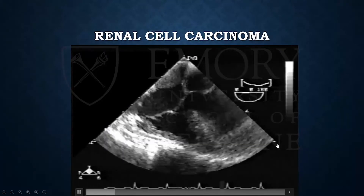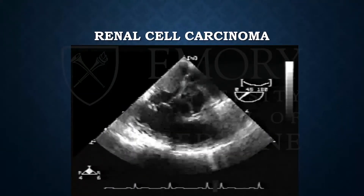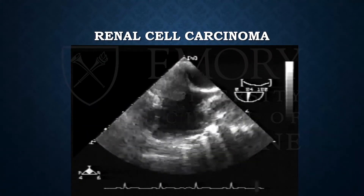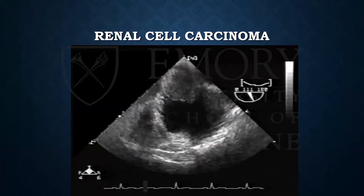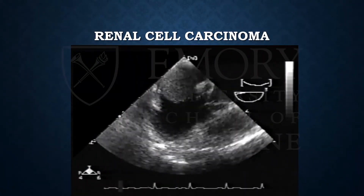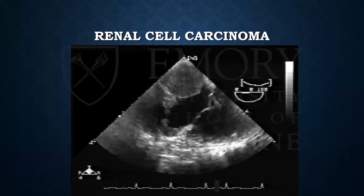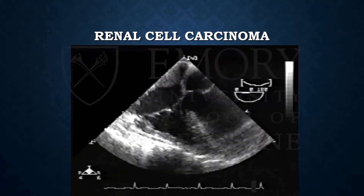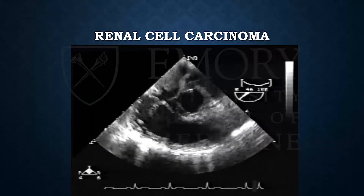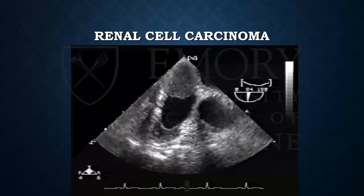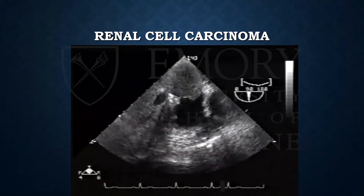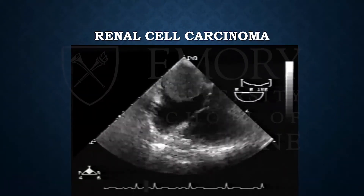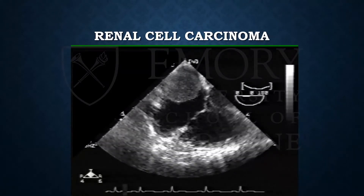This is an example of renal cell carcinoma discovered on TEE, encompassing a big portion of the right atrium. I included this slide to show that the mass itself can't really be differentiated from other masses based on morphology on echo alone. You have to take the whole clinical picture and know, for example, that this patient had a history of renal cell carcinoma, either previously treated or active.